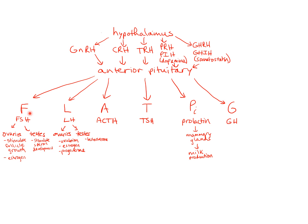FSH in women will travel to the ovaries. As the name follicle-stimulating hormone suggests, it tells the ovaries to stimulate follicle growth — the follicle is just the egg. The eggs will start to grow at the beginning of the menstrual cycle, and FSH will also stimulate the ovaries to make estrogen. In men, FSH goes to the testes and stimulates sperm development instead.